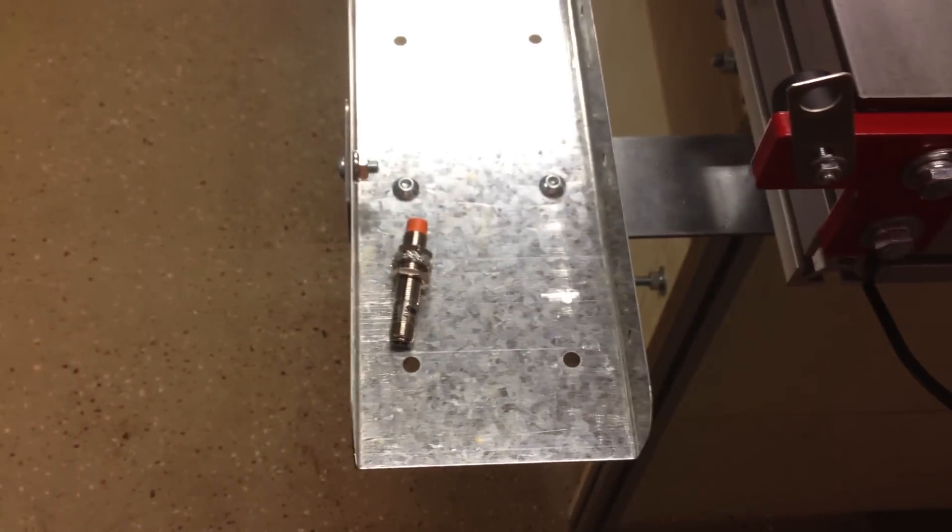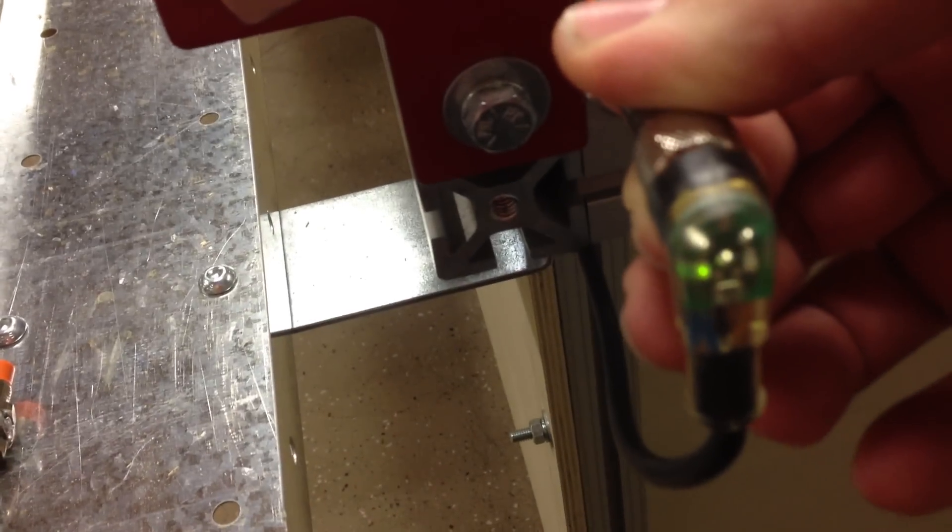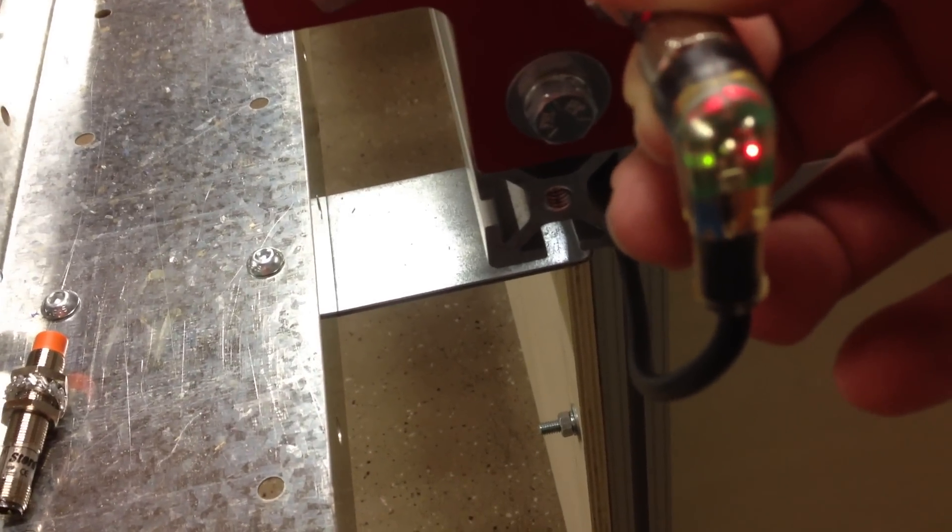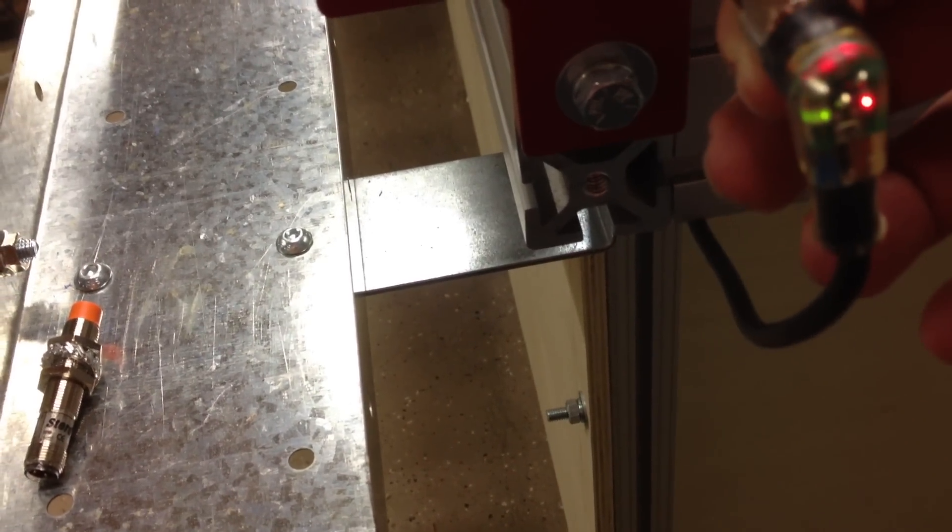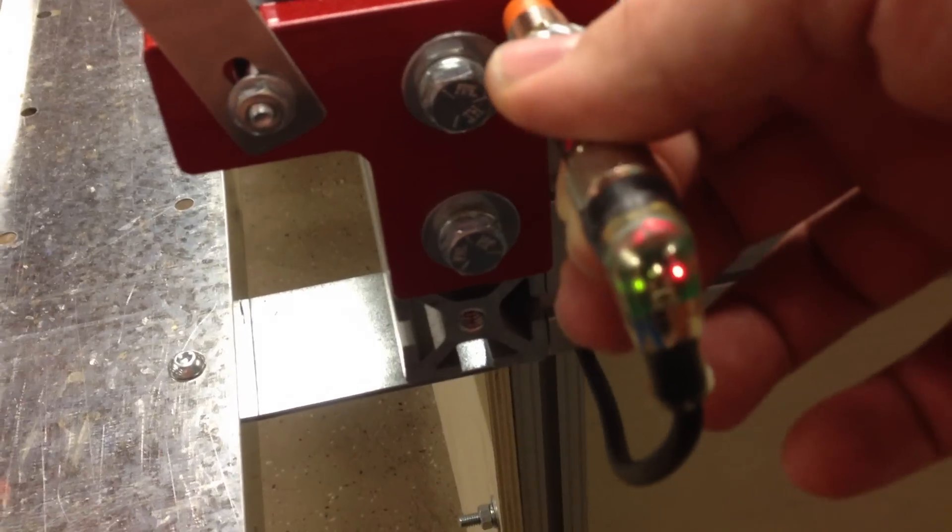The sensor that I thought had failed is working again. You can see there that if I bring it close into the metal, the red LED goes, and that means that it's tripping the way that it should be.